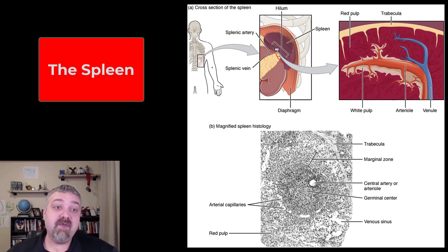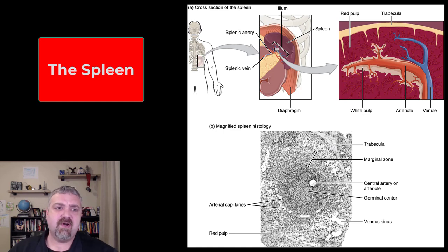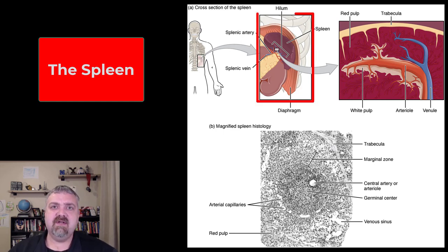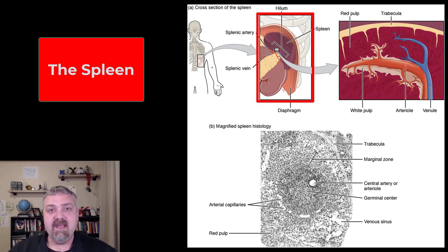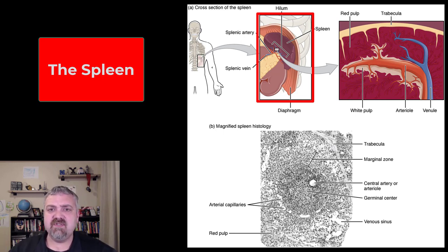Hey everybody, Dr. O. In this video, we're going to talk about the second major secondary lymphoid organ, and that is your spleen. So first, let's talk about structurally where it is. As you can see in the image there in the center, the spleen is right under the diaphragm. It's actually attached to the lateral border of the stomach by a little ligament, the gastrosplenic ligament.